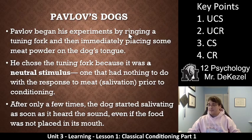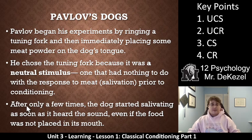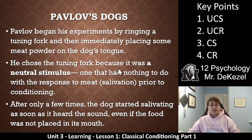Pavlov began his experiments by ringing a tuning fork or a bell, then immediately placing some meat powder on the dog's tongue. He chose the tuning fork because it was a neutral stimulus — one that had nothing to do with the response prior to conditioning. The bell was random, and the dog had no natural response to it. The meat powder, on the other hand, the dog would naturally salivate to. After only a few times, the dog started salivating as soon as it heard the sound, even if food was not placed in its mouth. Essentially, it had paired the sound of the bell with food, making it prepare for food every time it heard the bell. This is what we call classical conditioning.